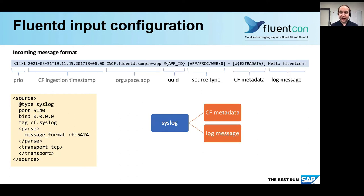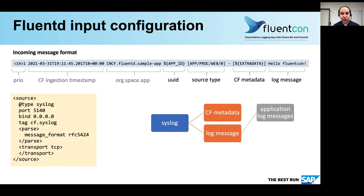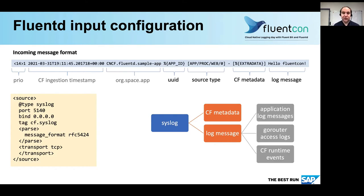The final part is the log message itself. And depending on the source type, there can be different formats in the log message. It can be the application log messages, the access logs from the Go router, or runtime events from Cloud Foundry — and I will explain that one as well.